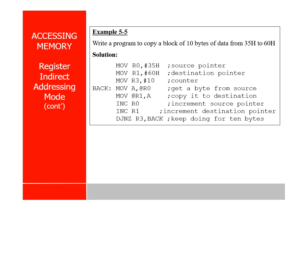Now, how can you copy data of 10 bytes from one memory location to another? Starting from address 35H, 10 consecutive memory locations have some data, and we want to copy that to memory locations starting from 60H. MOV R0, #35H — R0 gets 35H. MOV R1, #60H — R1 gets 60H. MOV R3, #10 — R3 is now 10, which is the counter in decimal.